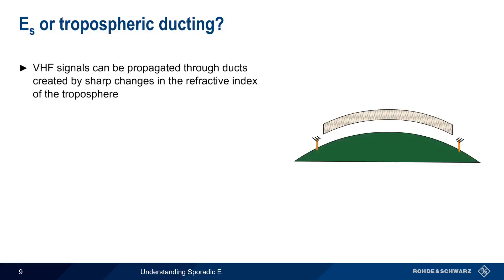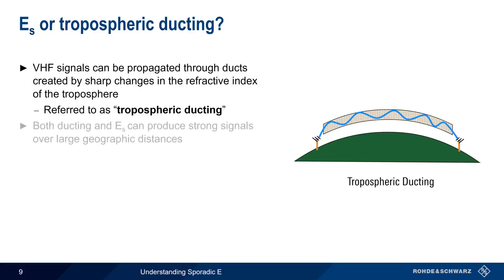Before we end this presentation, we need to briefly mention another way that VHF signals may be propagated over long distances. Sharp changes in the troposphere's refractive index can cause ducts that propagate VHF signals, and this is therefore referred to as tropospheric ducting. Although they work in different ways, both tropospheric ducting and sporadic E can produce strong signals over large geographic areas, so it's helpful to understand how to differentiate between them.